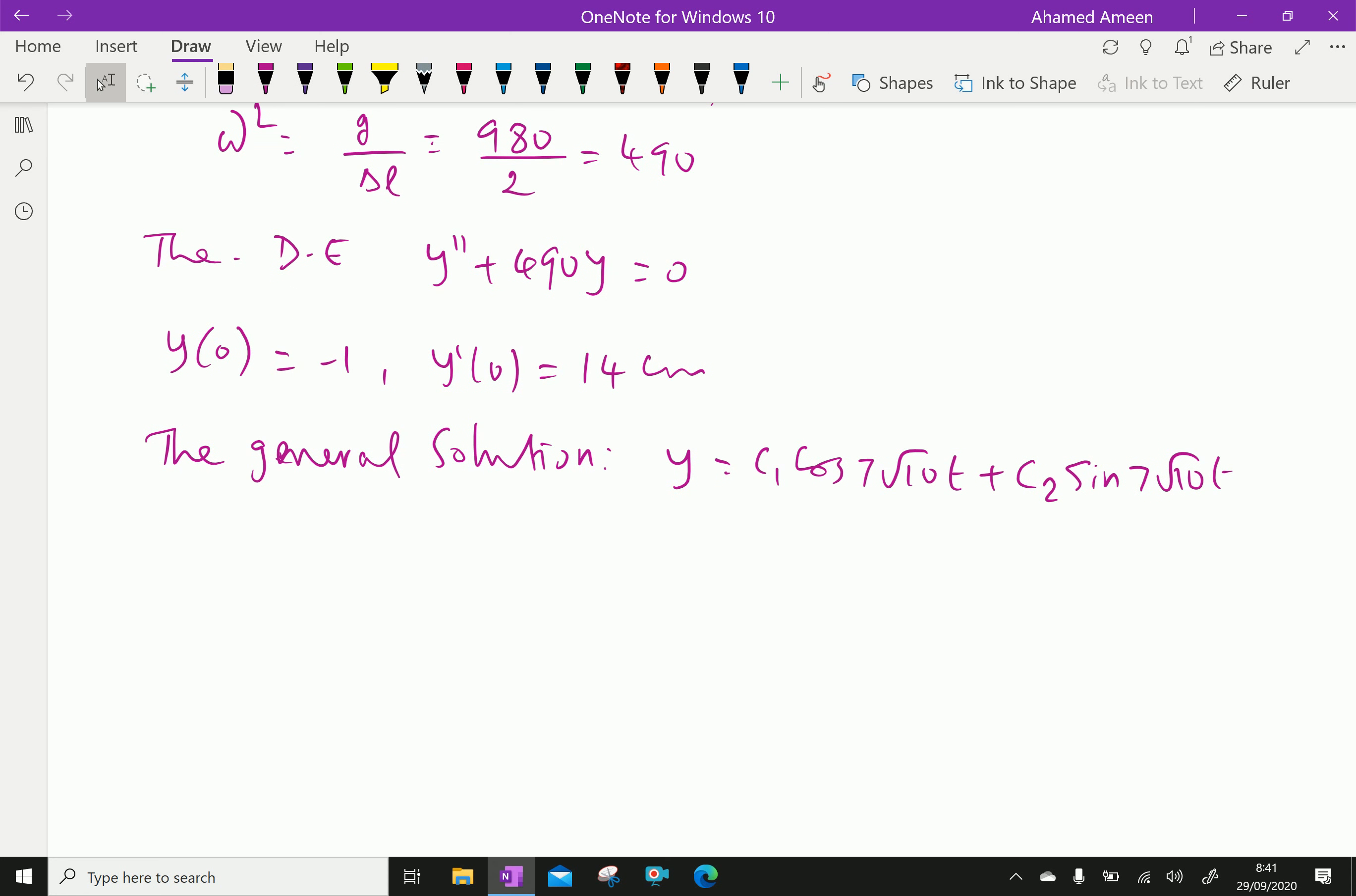We can write y prime by differentiating this. We get 7 root 10 times minus C1 sin 7 root 10 t plus C2 cos 7 root 10 t, because sine differentiation is cosine.